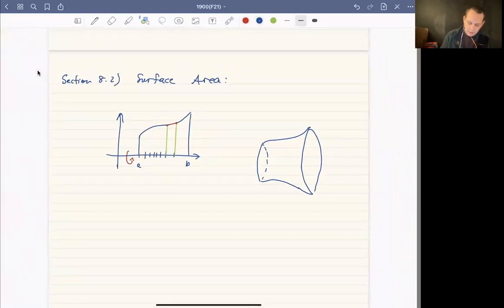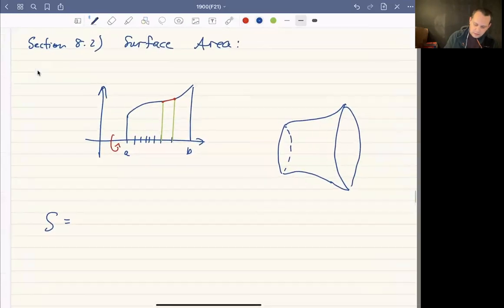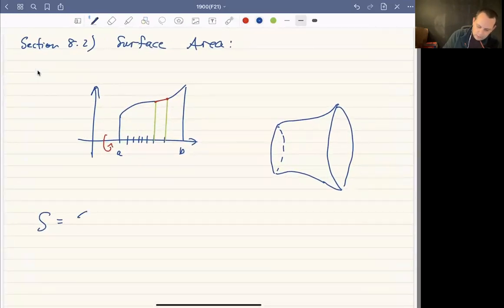And it turns out what we're going to add up to get the surface area, and I'm going to call the surface area S. But what we're going to add up is we're going to add up 2π times the height of this particular piece, so f(x_i), times the arc length of the piece,